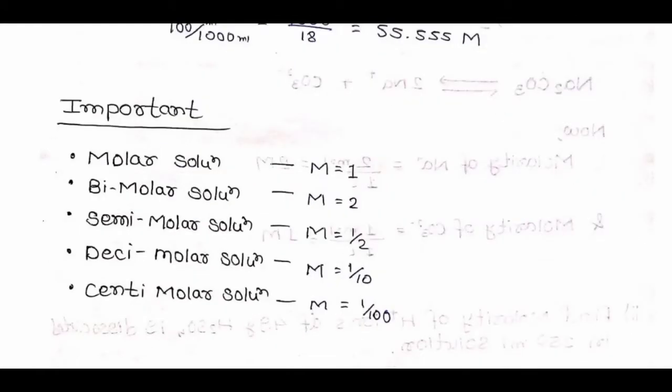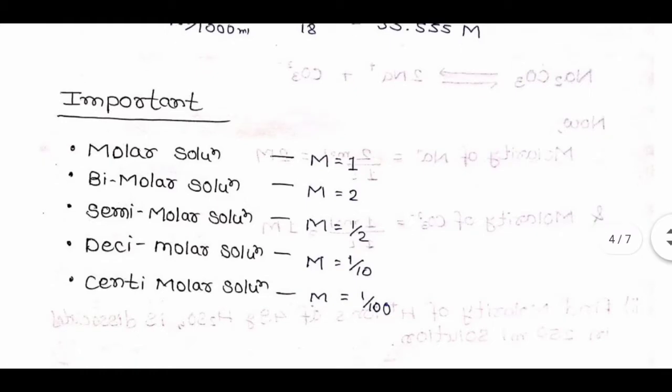Let us come to some important terms: molar solution means molarity = 1 M; semi-molar solution means molarity = 0.5 M; decimolar solution means molarity = 0.1 M; centimolar solution means molarity = 1/100 M.